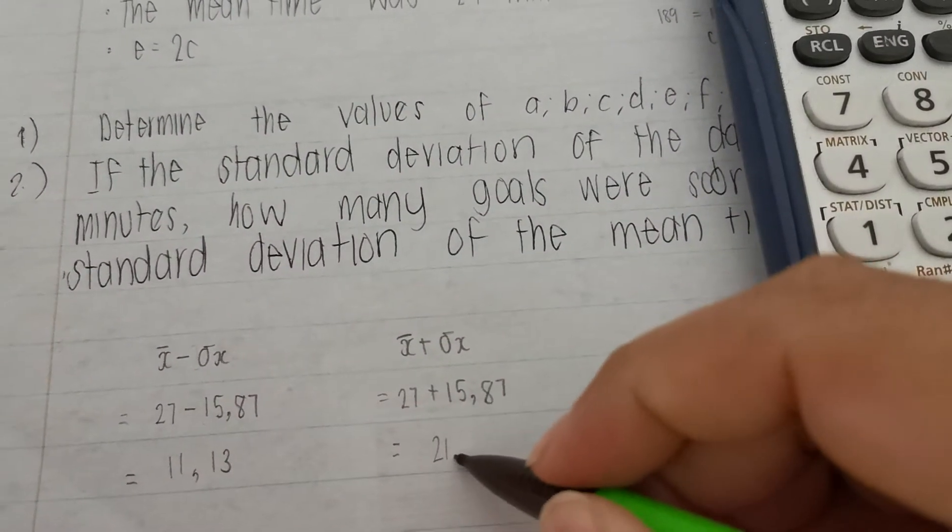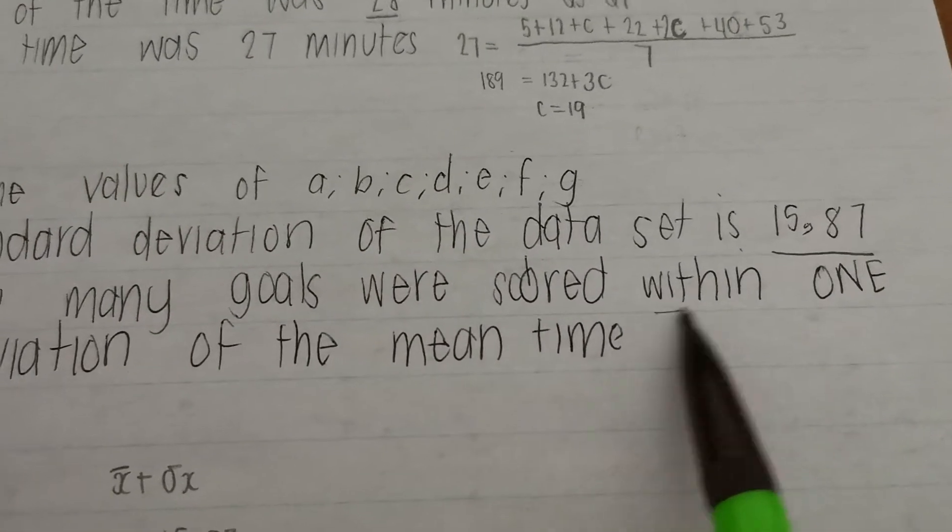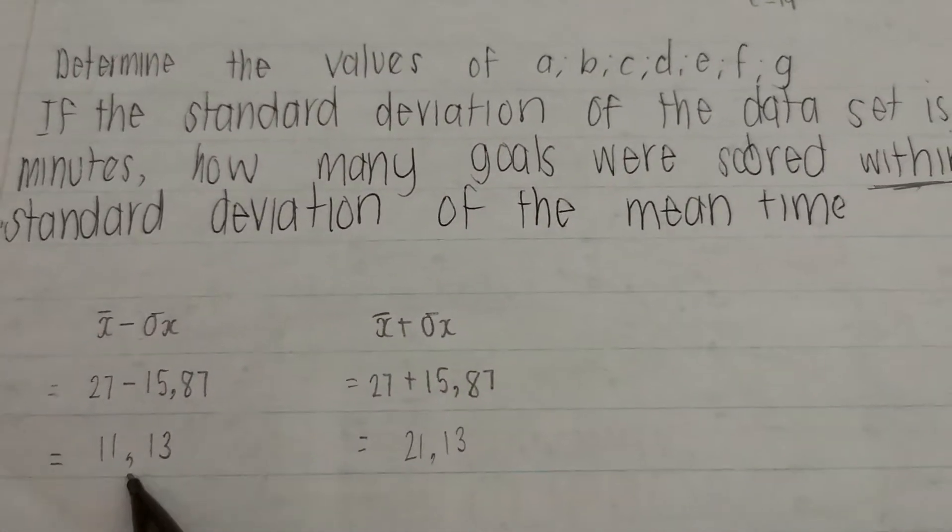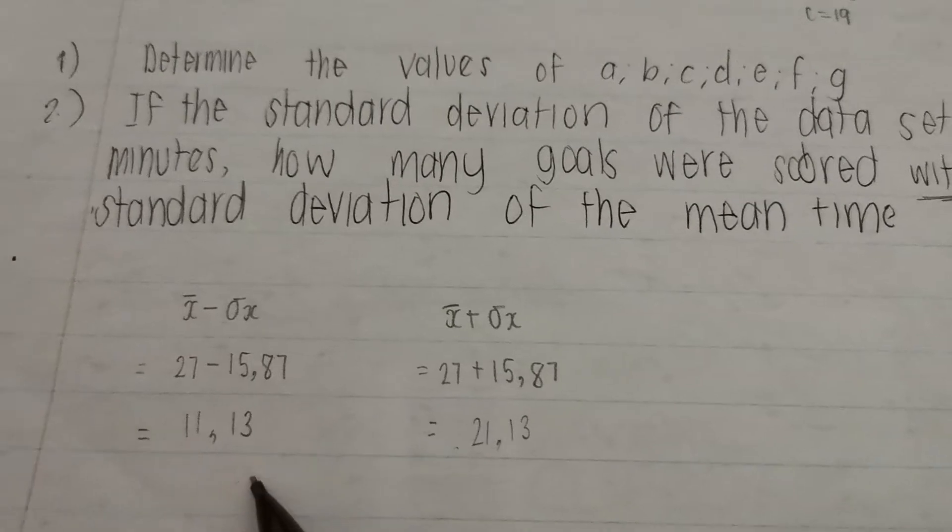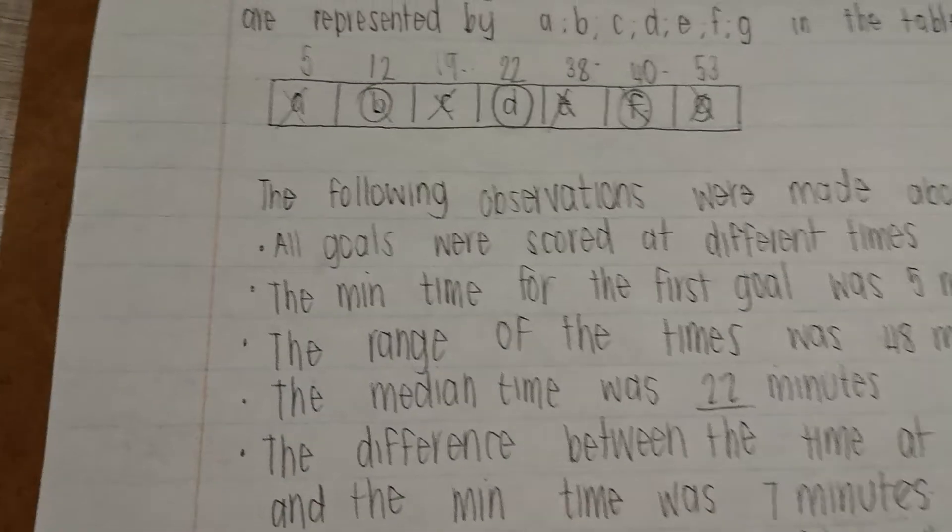If they said within two standard deviations, you'd put a 2 in front of you, and you'd multiply this number by 2. Then you type it in on your calculator and get the answer. On the same thing here. Let's work out these. So 27... 11.13... 42.87. There we go. So they want to know how many goals were scored within. So within would be in between these two numbers.